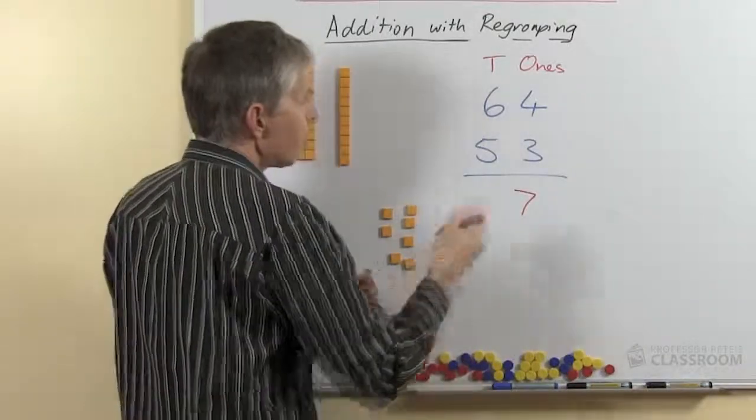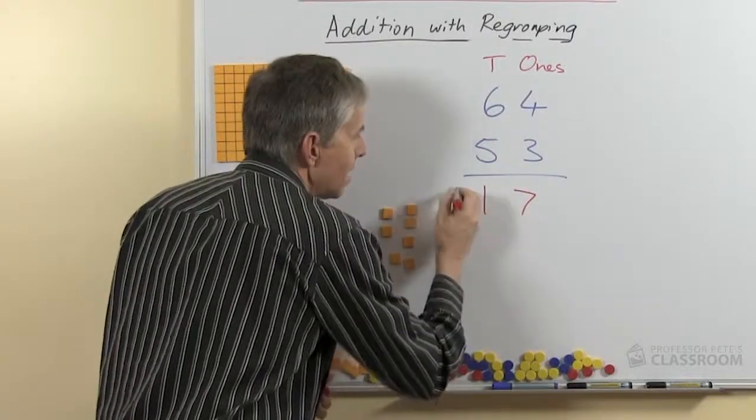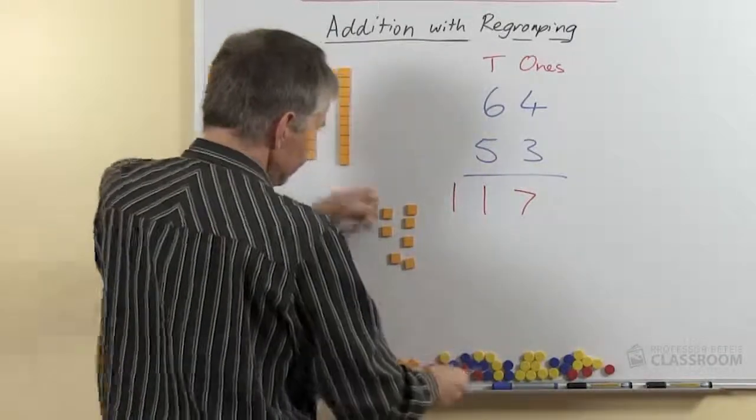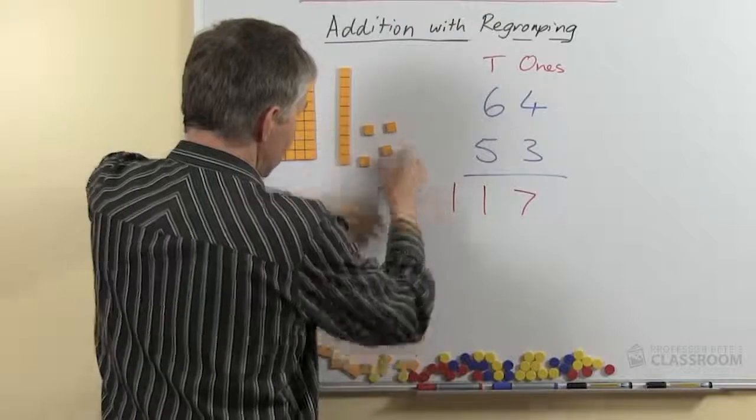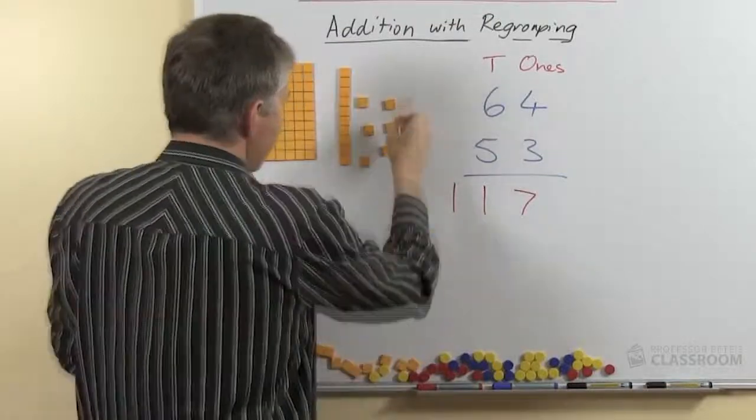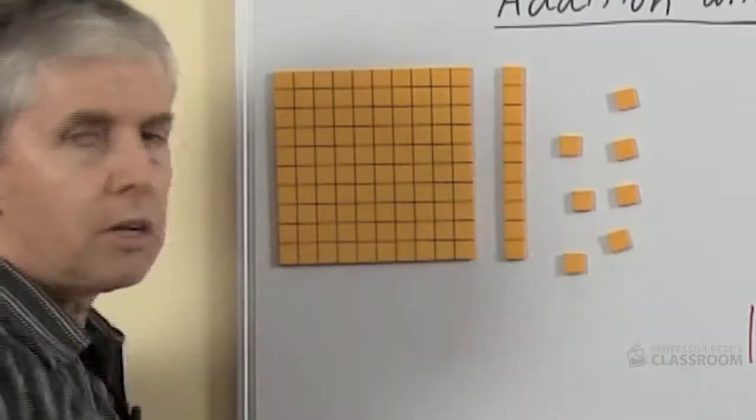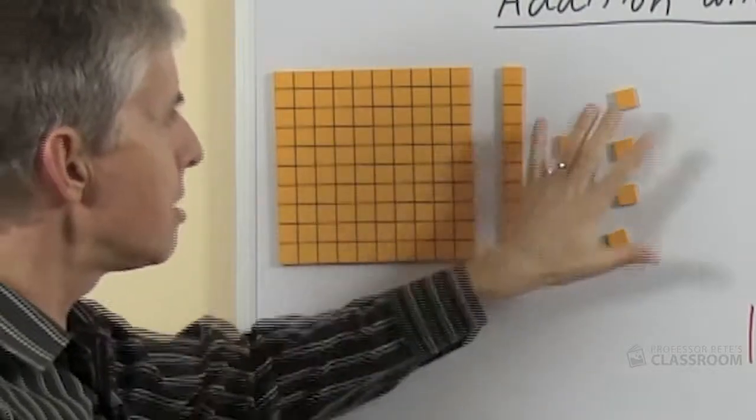So we write this down, 6 and 5 is 11, that makes 1 ten and 100. And then I'll move the 7 back here, and there's our answer. So you can see the answer, 117.